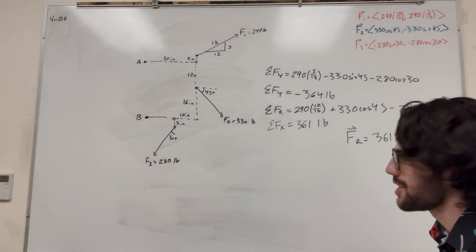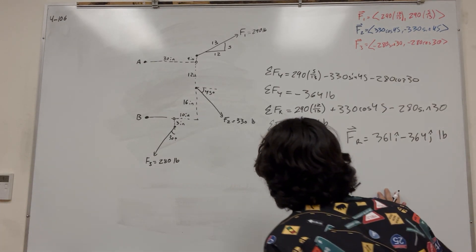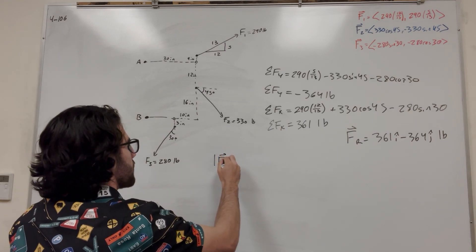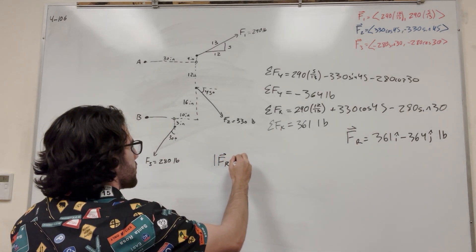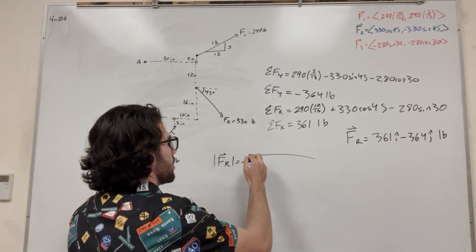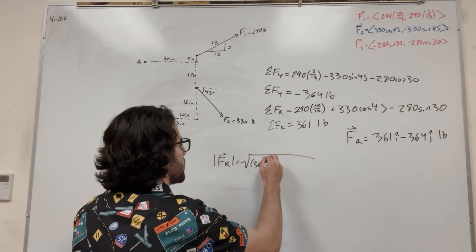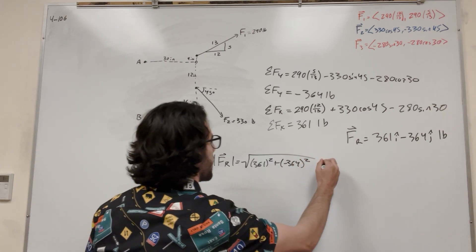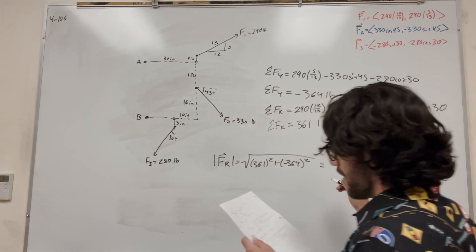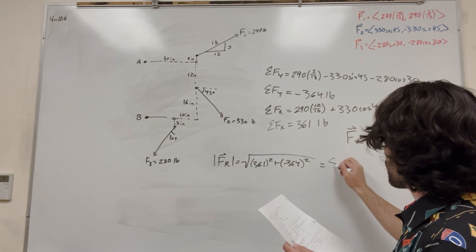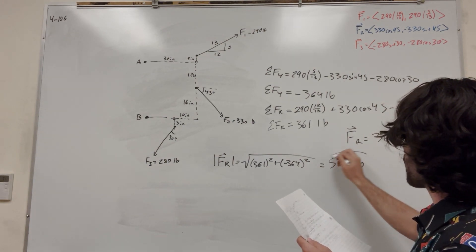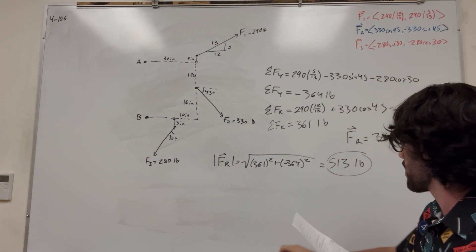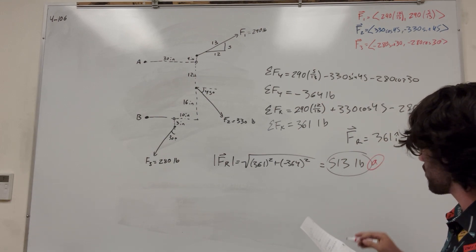So if we want to find the magnitude of this, we're just going to use Pythagoras' theorem. So the magnitude of F resultant equals the square root of 361 squared plus negative 364 squared, and that's going to give you 513 pounds. There you go — that's part A.